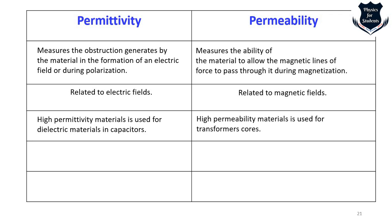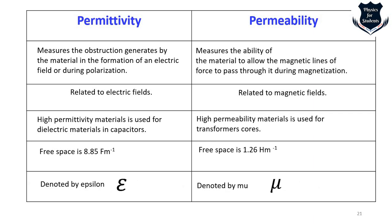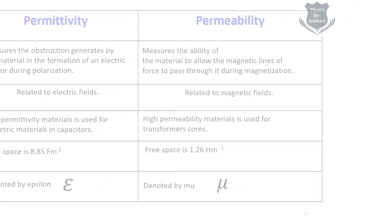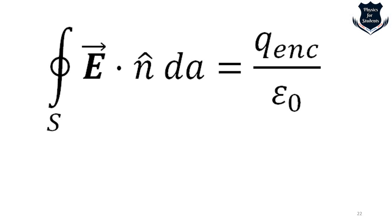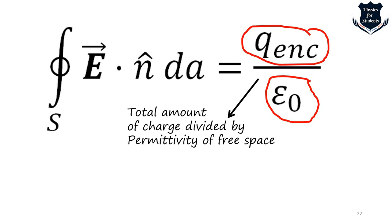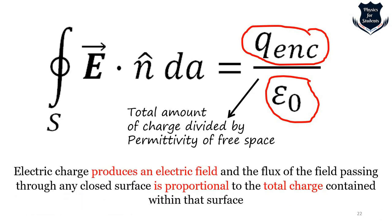Here is a quick overview of the difference between permittivity and permeability. Permittivity measures the obstruction of an electric field during polarization; permeability measures the ability of a material to allow magnetic field force to pass. Permittivity is related to the electric field; permeability is related to the magnetic field. High permittivity materials are used as dielectrics in capacitors; high permeability materials are used for transformer cores. Permittivity is denoted by epsilon; permeability by mu. The right-hand side of Gauss's law is the total charge divided by epsilon zero.